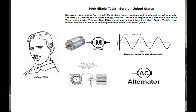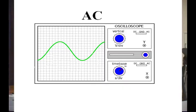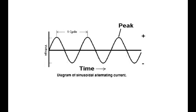Tesla worked with Thomas Edison and was a friend of Mark Twain. We can thank him for the motor. Looking at alternating current on an oscilloscope graph, the vertical axis is voltage and the horizontal axis is time. In AC, the voltage swings positive, then negative, then positive, then negative, and so on.